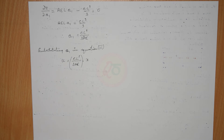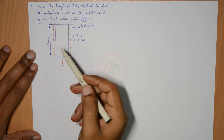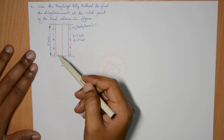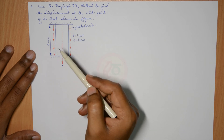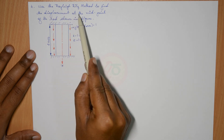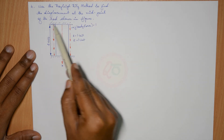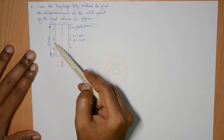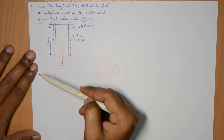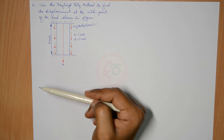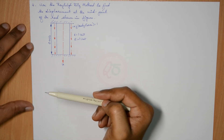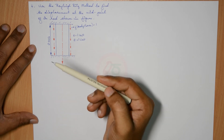We now look at the second problem, which is similar but does not have a point load — it has a body force acting on it. Use the Rayleigh Ritz method to find the displacement at the midpoint of the rod. The overall length is 2 units, so the midpoint is at 1 unit. The body force F equals 1, and both A and E are taken as 1 unit.